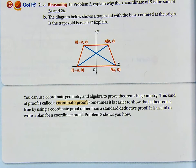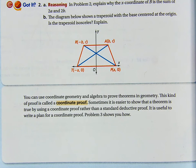At the bottom of this page it says you can use coordinate geometry and algebra — because there's a lot of algebra involved — to prove theorems in geometry. This kind of proof is called a coordinate proof. Sometimes it's easier to show that a theorem is true by using coordinates rather than standard deductive proofs.